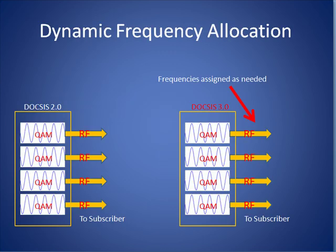The modular CMTS architecture definition in the new DOCSIS 3.0 standard also allows for dynamic frequency allocation and channel bonding — two techniques that a CMTS can use to provide large amounts of bandwidth both in the upstream and downstream direction for brief periods as need arises.